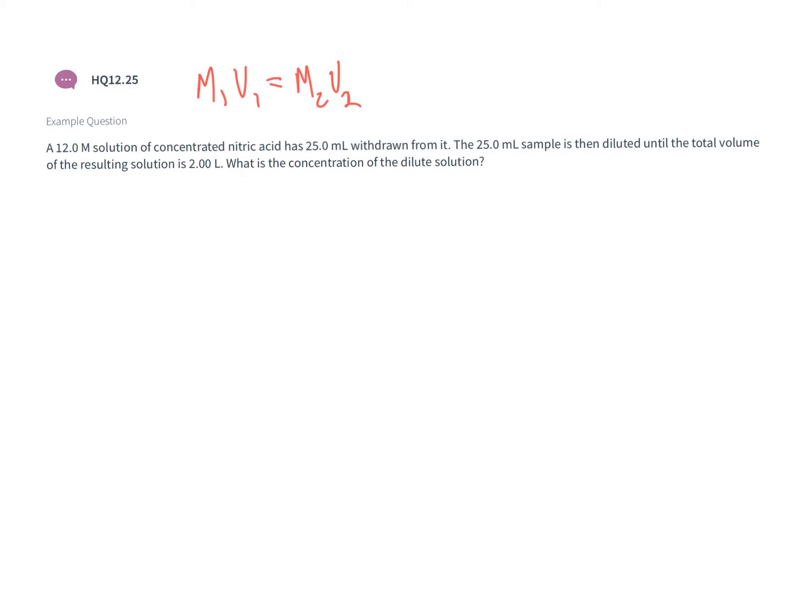Because we're doing a dilution, we should come up with a lower concentration than our initial solution. We take 25 milliliters of the 12 molar solution, and then dilute it to 2 liters total volume by adding 1975 milliliters to have a final volume of 2 liters.